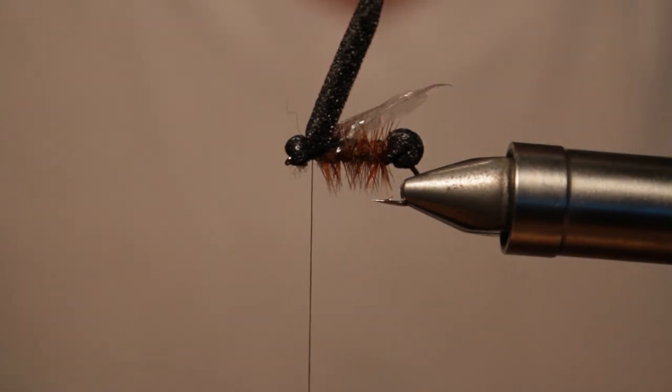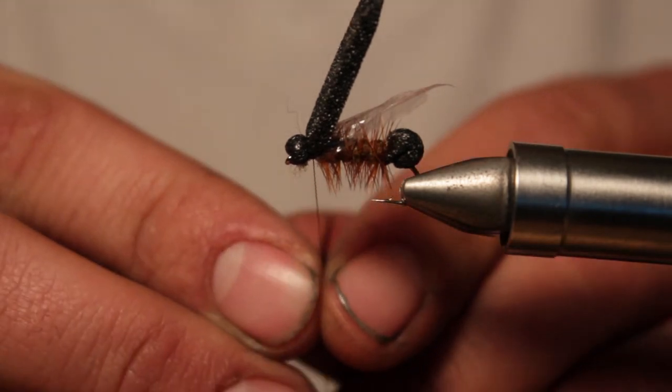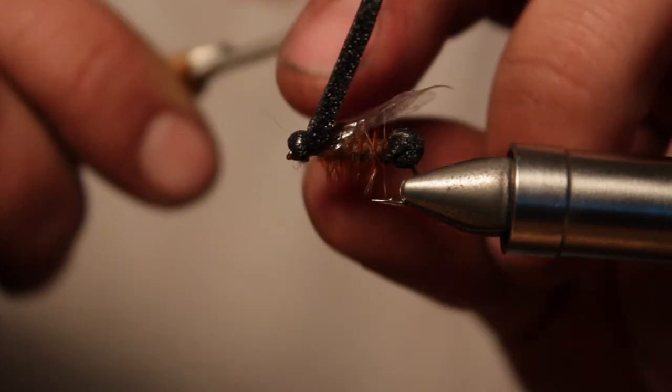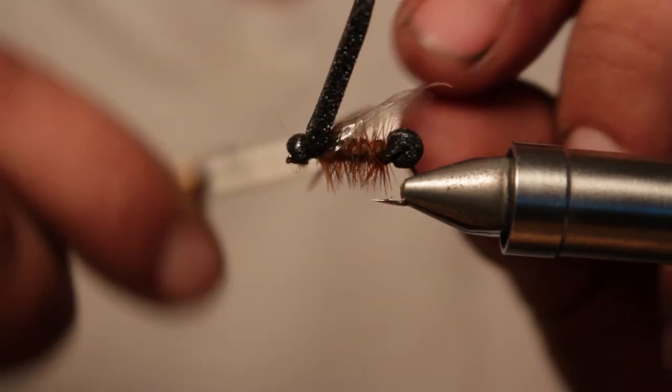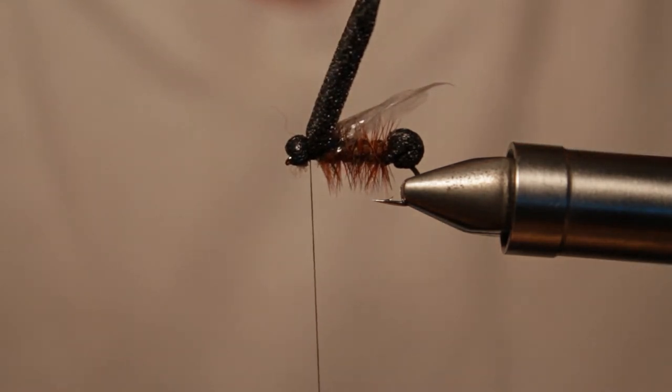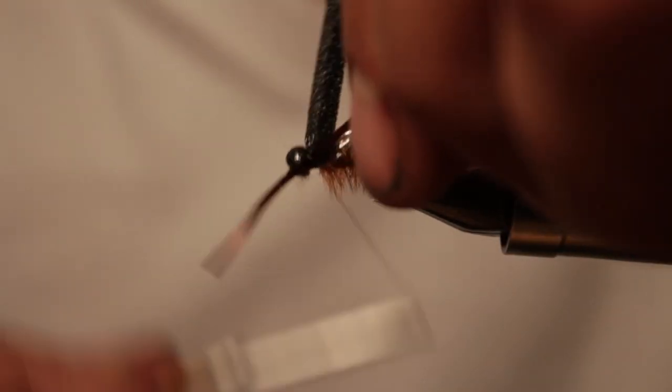Once we have our head formed there, we're actually going to tie in a couple little legs up front here. And for this, I'm just using some brown rubber legs here. It doesn't really matter, you can actually use whatever rubber legs you want. I'm just going to put two on either side here. Wrap the legs around your thing and a couple good wraps.